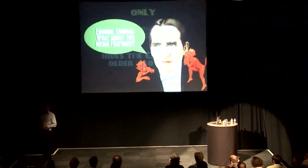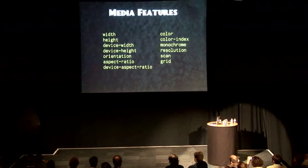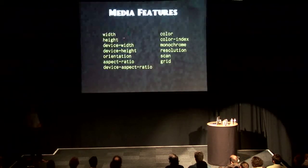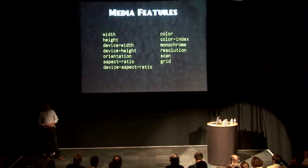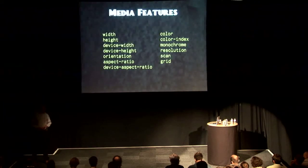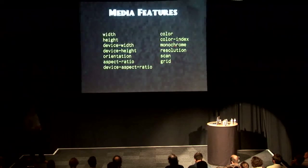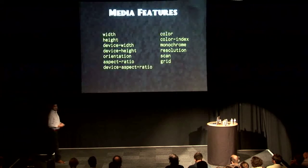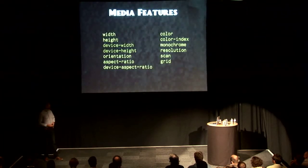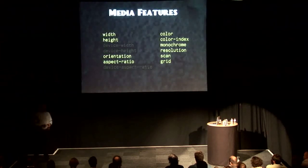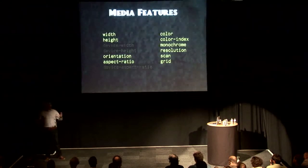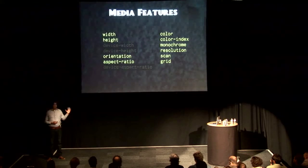Let's talk about some of the media features in the spec. Most of us focus on a handful, but there are a lot more. Some of these were originally made for print — Opera has a lot to do with the media query spec editor, and Opera does a lot with paged and print media. So features like monochrome were originally for black-and-white printers. Device width and device height we're not really going to use right now, and I'll get into why in a few minutes.